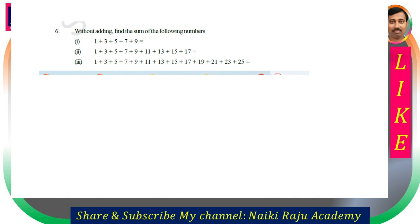Without adding, find the sum of the following numbers. Observe: these are consecutive odd numbers. The number of odd numbers is 5. The formula is: sum of first n odd numbers is n square. So 5 square equals 25. Similarly, up to 17 there are 9 odd numbers, so 9 square is the answer. Up to 25 there are 13 odd numbers, so 13 square is the answer.